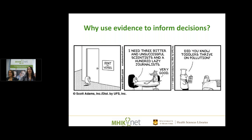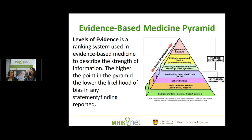You all talked in your responses about how evidence is critical to making sure you have quality decisions. This is the evidence-based medicine pyramid. At the bottom there's background and expert opinion, all the way to the top — systematic reviews — which are the highest quality of evidence.